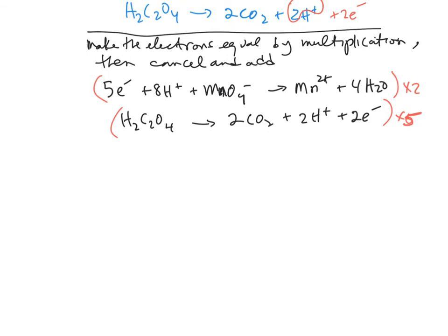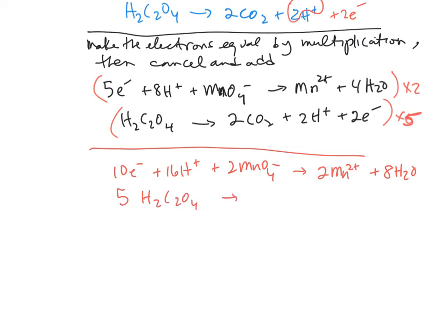So this will give us 10 electrons plus 16H plus, 2 permanganate, 2 manganese 2 plus, and 8 waters. Then we have 5 oxalic acids, forming 10 CO2s, 10 H plus, and 10 electrons. Then cancel the electrons. 10 H pluses cancel with 10 here, and there you get 6 left over.